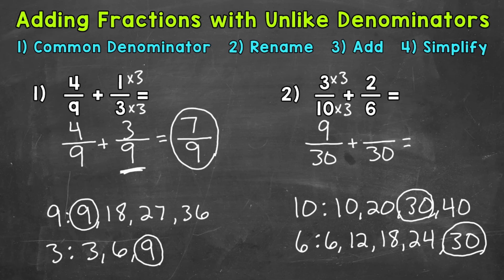Now we do 2 sixths. So we think, how do we get 6 to equal 30? 6 times what is 30? Well, 6 times 5 is 30. Whatever we do to the denominator, we do to the numerator. So 2 times 5 gives us 10. 10 thirtieths is equivalent to 2 sixths.